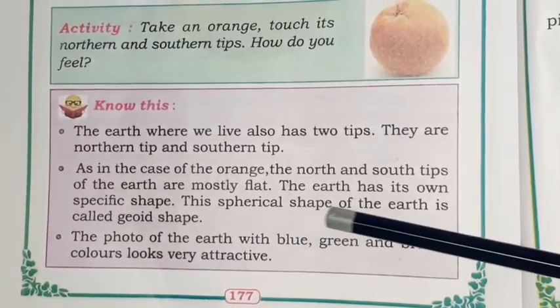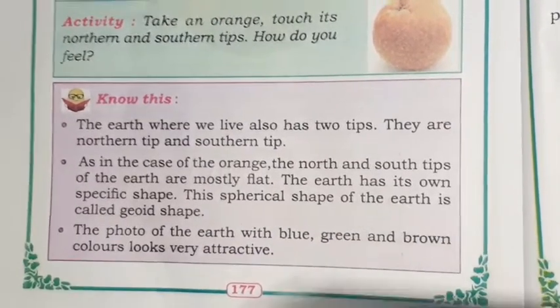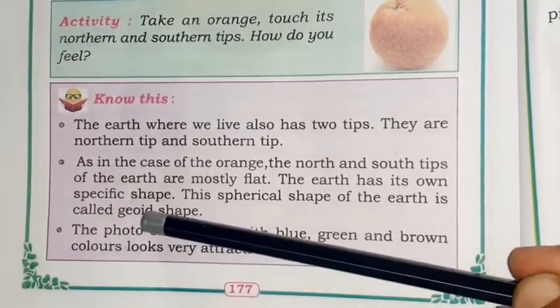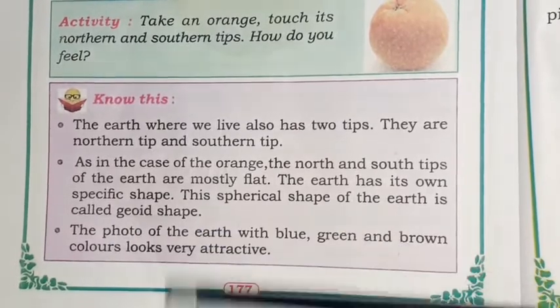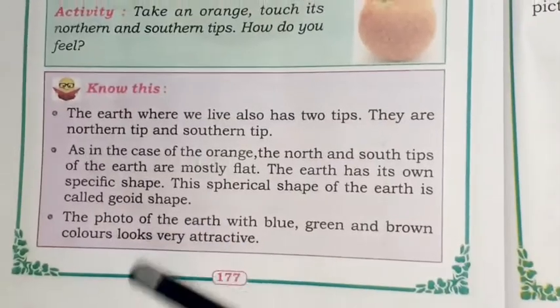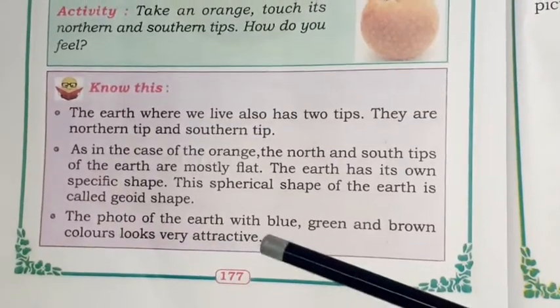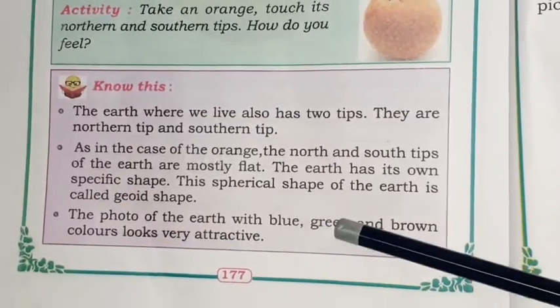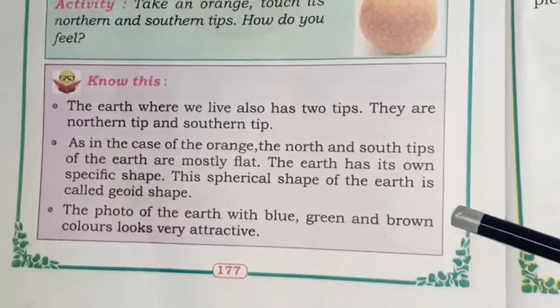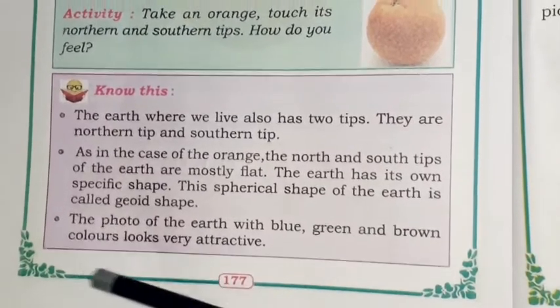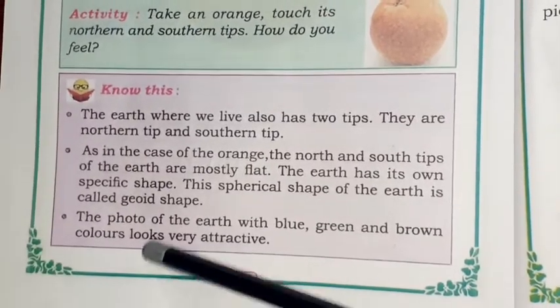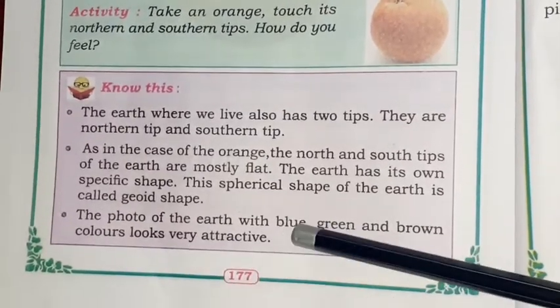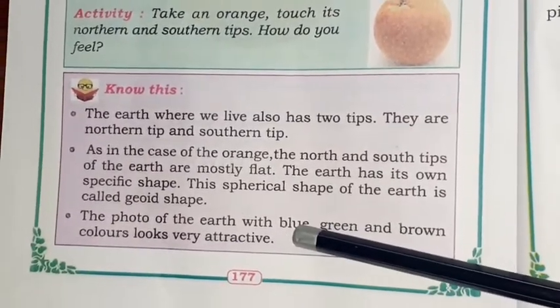The earth has its own specific shape. This spherical shape of the earth is called the geoid shape. The photo of the earth with blue, green, and brown colors looks very attractive.